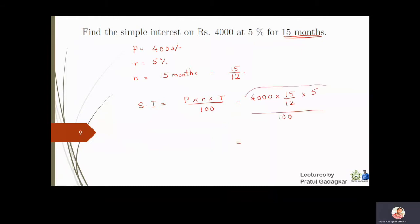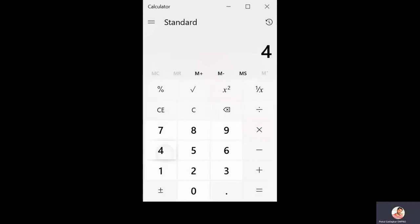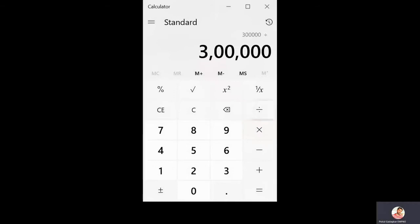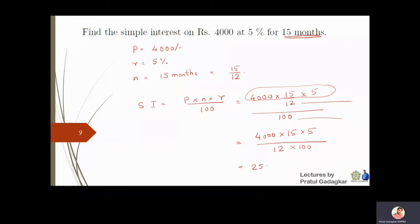Multiplying the numerators: 4000 × 15 × 5, and the denominators are 12 × 100. Using the calculator: 4000 × 15 × 5 = 3,00,000; divided by 12 = 25,000; divided by 100 = 250. So the simple interest is rupees 250.